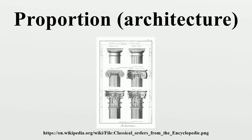Moreover, Vitruvius identified the six principles of design as order, arrangement, proportion, symmetry, propriety, and economy. The word symmetra actually has a very different meaning from how we interpret it today. Among the six principles, proportion interrelates and supports all the other factors in geometrical forms and arithmetical ratios. Symmetra is translated to symmetry in modern language, which does not mean symmetrical in forms in ancient language, but is more closely related to mathematical harmony and measurable proportions.